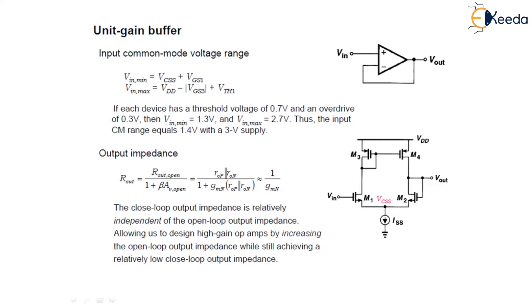If each of the device has a threshold voltage of 0.7V and an overdrive voltage of 0.3V, then VIN-min is calculated as 1.3V and VIN-max is calculated to be 2.7V. Thus this input common mode ranges from 1.4V with a 3V supply.